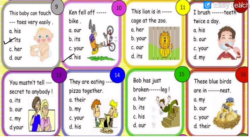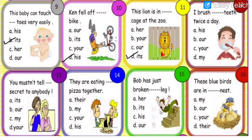Number eleven: this lion is in dash cage at the zoo. Options are her cage, your cage, our cage, or its cage. It is an animal — a lion — so we write 'its.' The lion is in its cage. For an animal we write 'it,' and also for a baby we write 'it.'